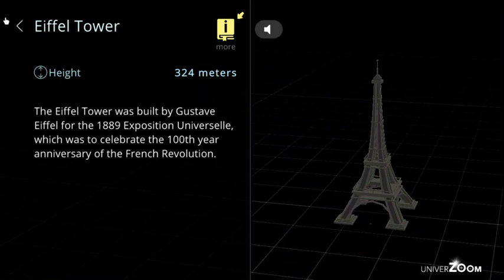Eiffel Tower, height: 324 meters. The Eiffel Tower was built by Gustave Eiffel for the 1889 Exposition Universelle, which was to celebrate the 100th year anniversary of the French Revolution.